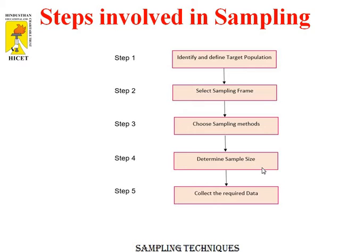Step 4 is determining sample size — the number of individuals or items to be taken in a sample that would be enough to make inferences about the population with the desired level of accuracy and precision. Larger the sample size, the more accurate our inferences about the population would be.